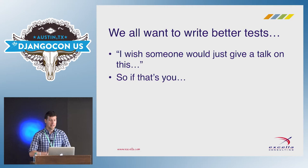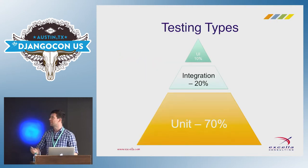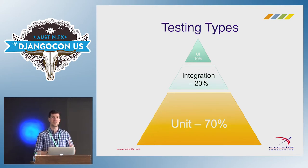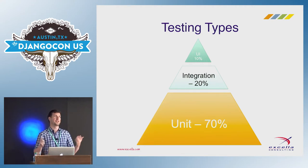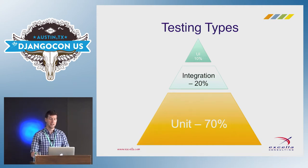Let's talk about unit tests. Hopefully you've seen this at some point — this is Martin Fowler's pyramid of testing. The idea is that he tries to quantify how much of our testing should be unit tests versus integration tests versus UI or manual testing. Obviously, the significant majority of it is unit testing, which is kind of ironic because many of us are really bad at unit testing and we don't write lots of unit tests like we should.